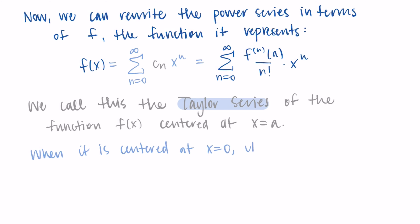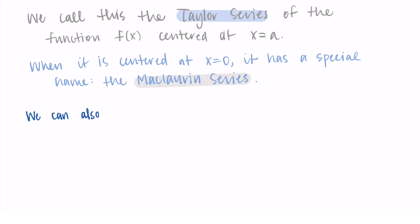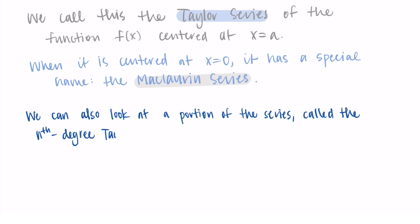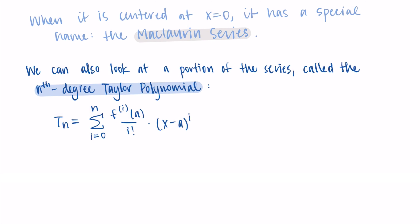When we use x equals zero as the center for our Taylor series, we have a special name for it: the Maclaurin series. It's just a Taylor series centered at zero. If we want to look at only a finite portion of the series — which is practical for computation since we can't run infinite calculations — we call that the nth degree Taylor polynomial, looking at the sum from i equals zero to n.